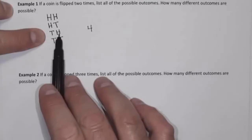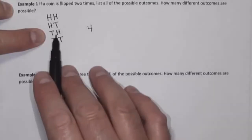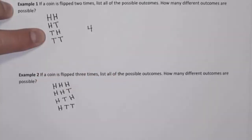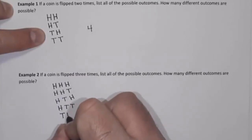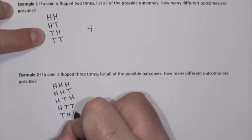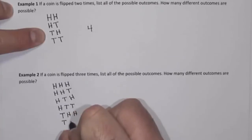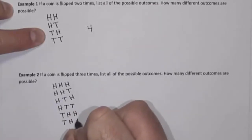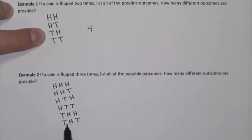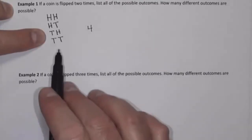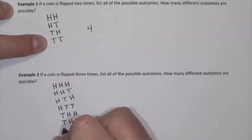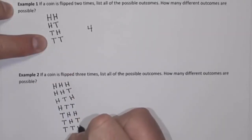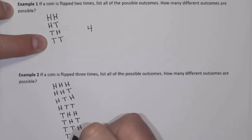We could also get tails on the first flip and heads on the second flip, and if we do, we could get heads or tails on the third flip: tails-heads-heads or tails-heads-tails. And if we get tails on the first and tails on the second flip, then we could get heads or tails on the third flip: tails-tails-heads or tails-tails-tails.